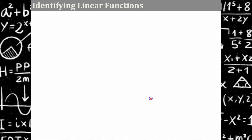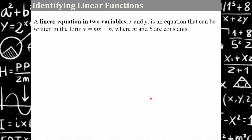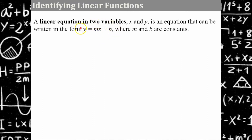Let's talk about identifying linear functions. A linear equation in two variables, x and y, is an equation that can be written in the form y equals mx plus b, where m and b are constants. This is not an equation you can solve because it has two unknowns, y and x. M here is the slope, b is the y-intercept. This is what we call slope-intercept form, and it's a linear equation written in two variables — the equation of a line.